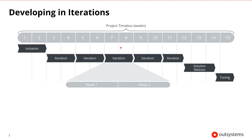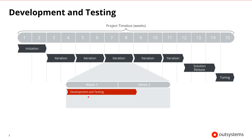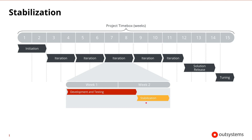An agile project usually defines a time box, or a number of weeks over which the project will occur. In that time box, there will be a number of iterations, followed by a solution release stage and a tuning stage. OutSystems projects are normally developed in iterations that last two to three weeks. Each iteration focuses on a group of user stories and involves developing those user stories in the application and writing their tests, then stabilizing the iteration with any needed bug fixes or improvements.